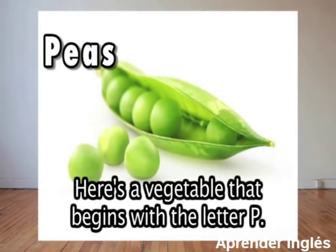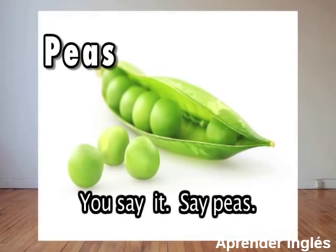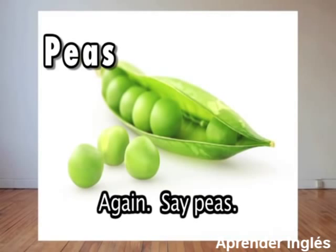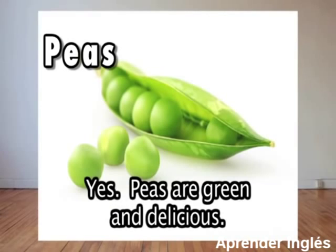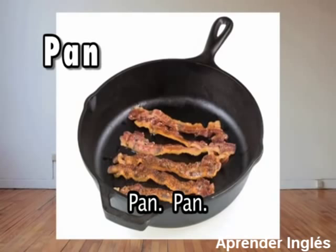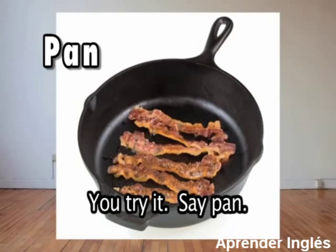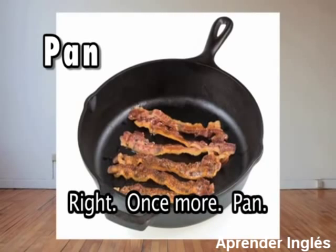Here's a vegetable that begins with the letter P: peas. P, e's. You say it, say peas. Again, say peas. One more time, peas. Yes, peas are green and delicious. This is a pan — P-an. Pan. You try it, say pan. Yes, again pan. Right. Once more, pan.